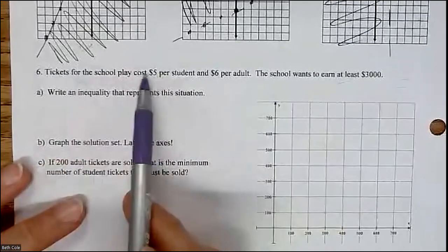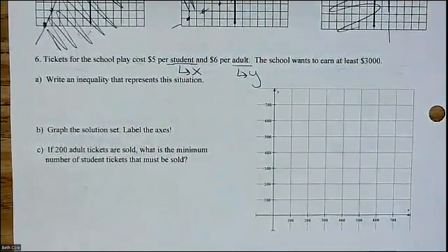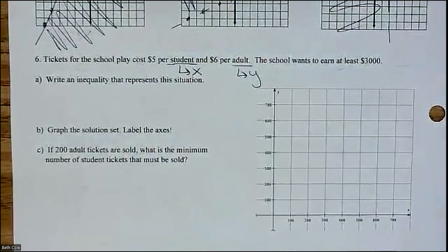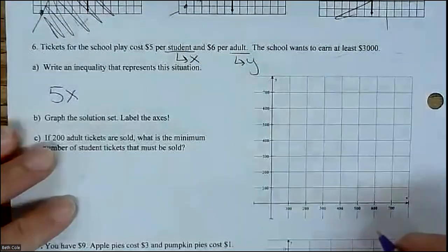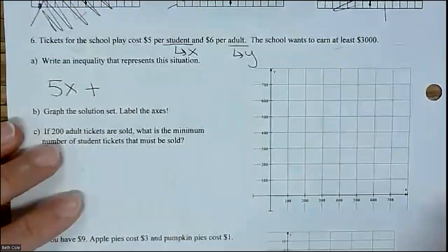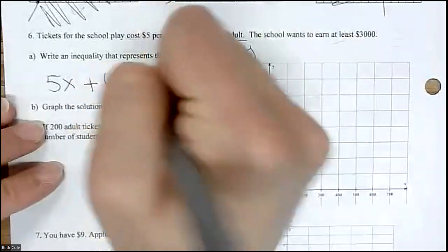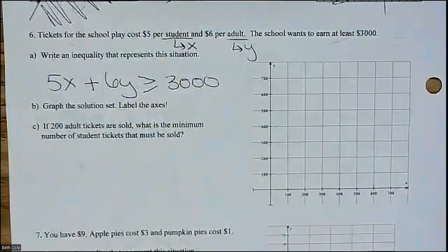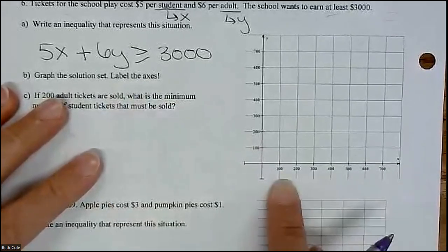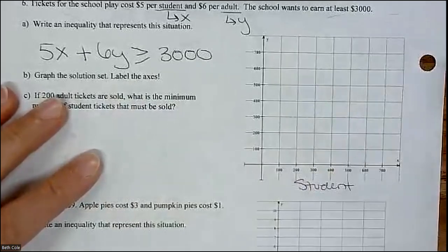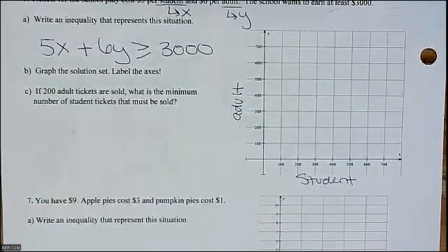Now you've got your word problems. Tickets for the school play cost $5 per student. Let's make student be x. $6 per adult. Let's make adult be y. We want to earn at least $3,000. That means we want to earn $3,000 or more. At least $3,000. Let's write an inequality. It would be 5x plus 6y. Now it's not equals because we want to earn at least that much. We want $3,000 or more. Greater than or equal to $3,000. Now we're going to graph it. Guess what? The calculator is going to do it for us. Now it does say label the axes. So x was student and then y was adult.